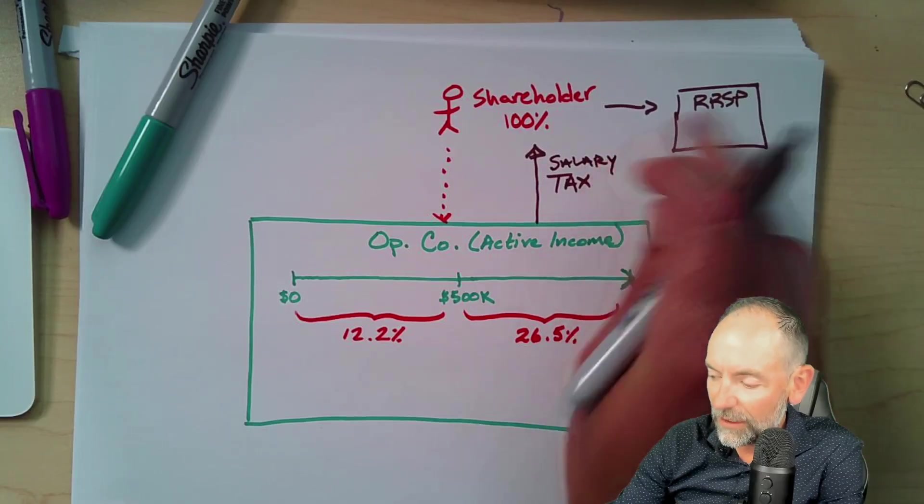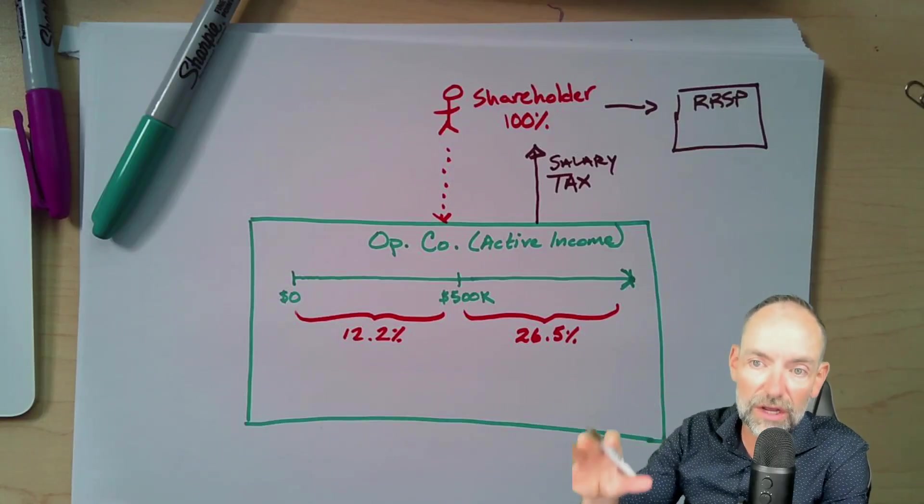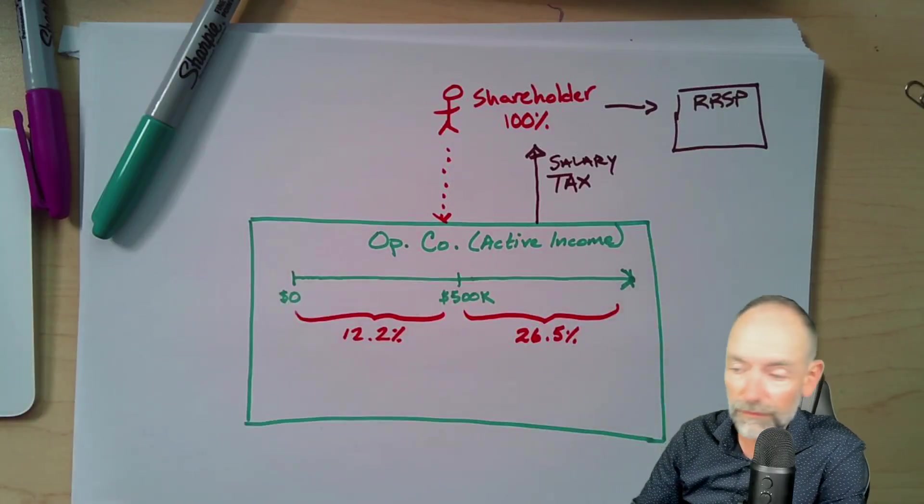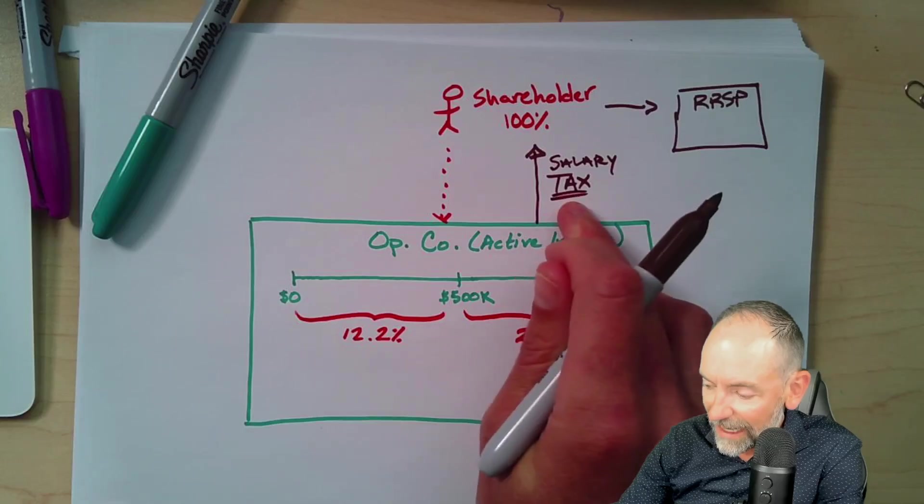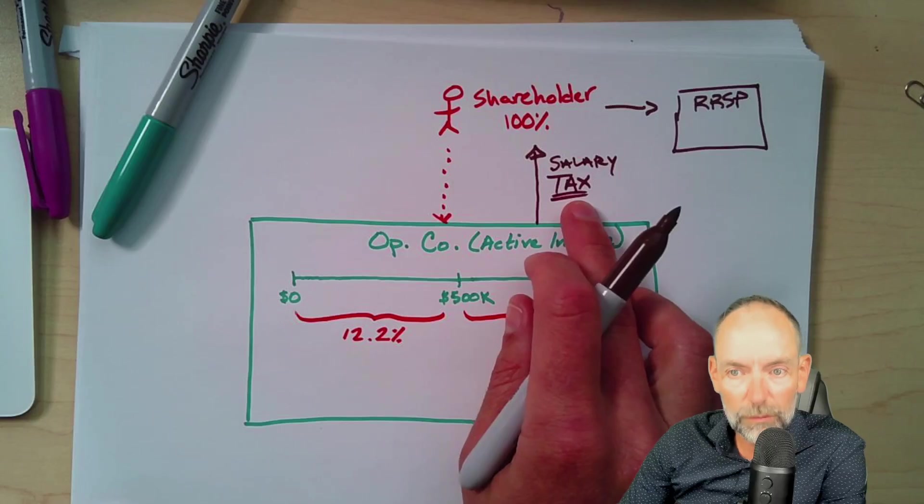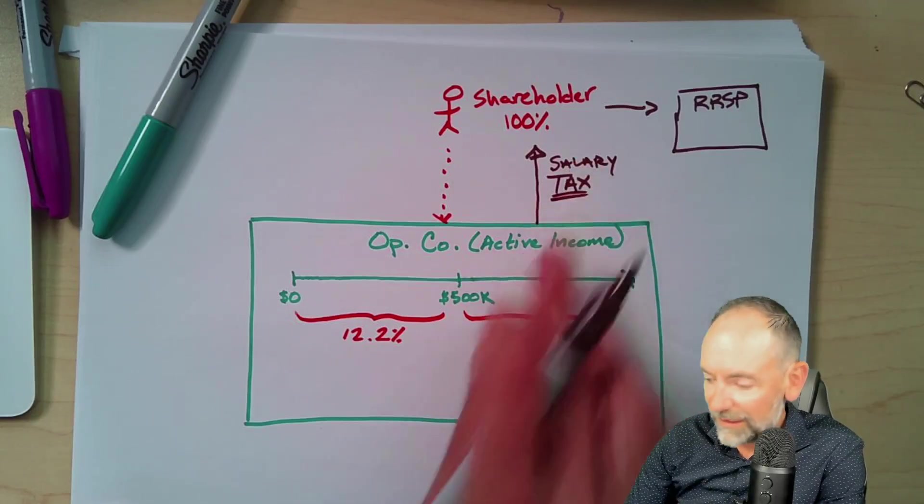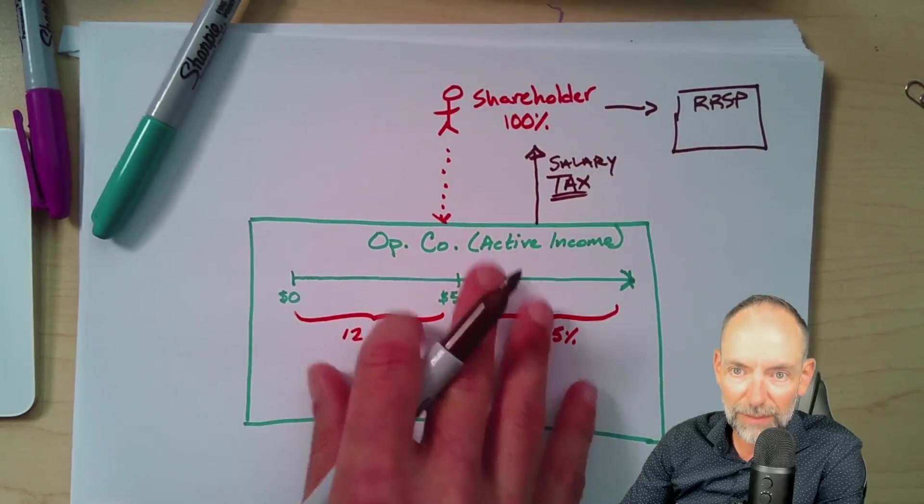You already have RRSP room for whatever reason, other salary jobs that you had, or maybe you took a salary from your company previously. Either way, you're gonna have tax. And the challenge is, if I'm taking a small amount, then the tax is obviously not gonna be super punitive. If I take a salary, that's gonna be a deduction to the company. So I'm not gonna pay tax in the company.